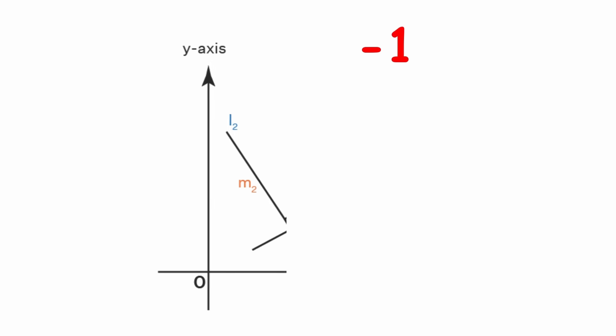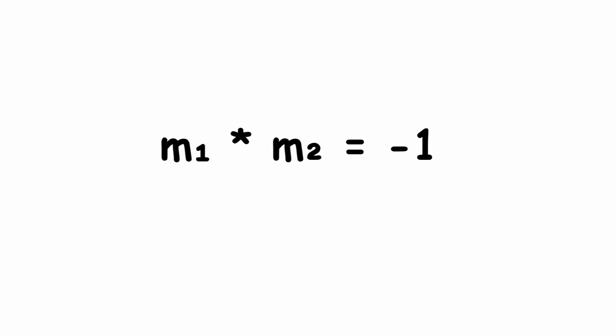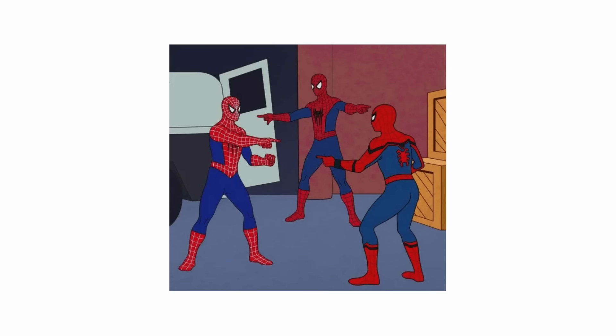Two lines are perpendicular if the product of their slopes equals negative 1. m1 times m2 equals negative 1. There are different ways of expressing the equation of the line.